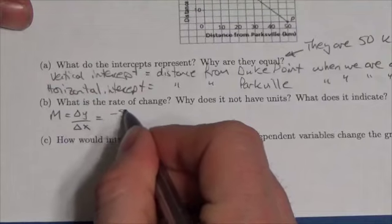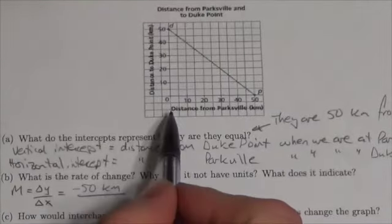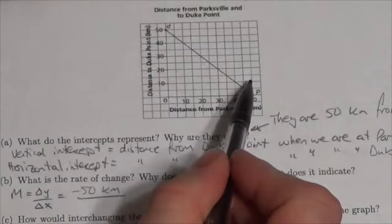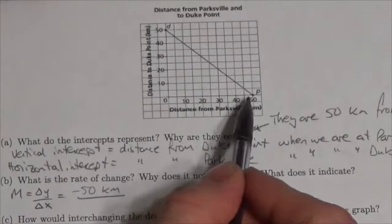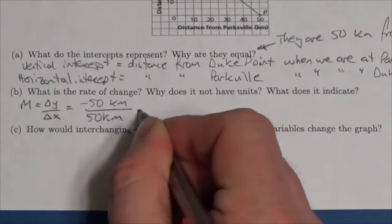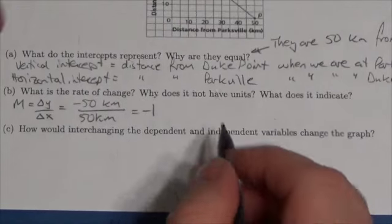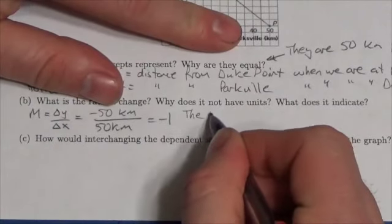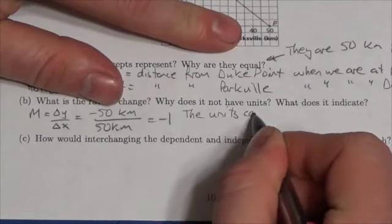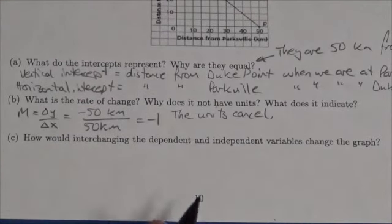So we might write negative 50 kilometers over—and then to go from this point to this point, we go horizontally over 50 kilometers. So over 50 kilometers, and the answer is just negative 1. Now why does it not have units? Because the units cancel. Kilometers over kilometers cancels.